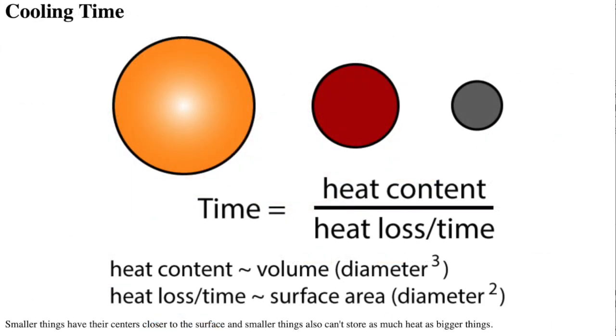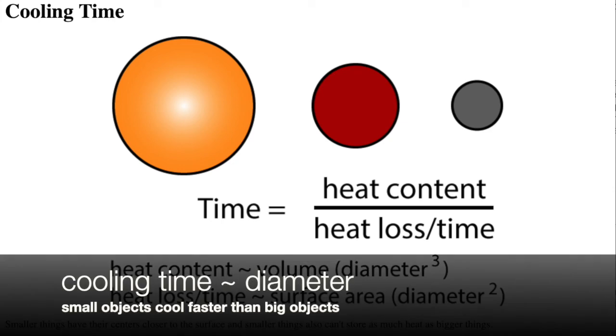Larger planets lose their heat from formation and radioactive decay more slowly than small planets. A planet with a larger volume than another planet of the same composition will start off with a larger supply of heat energy. In addition, the heat in a large planet's interior has a great distance to travel to reach the planet's surface and the cold outer space. The rate of heat loss increases with the surface area. The time it takes for a planet to cool off depends on the total amount of heat stored divided by the rate of heat loss, or its volume divided by its surface area, which means the cooling time is proportional to the planet's diameter.